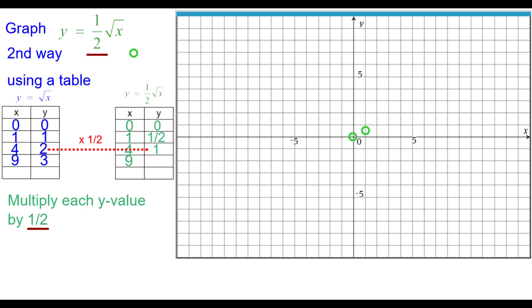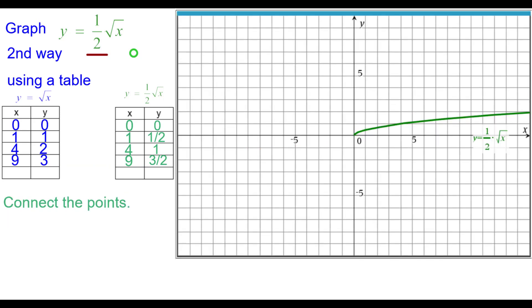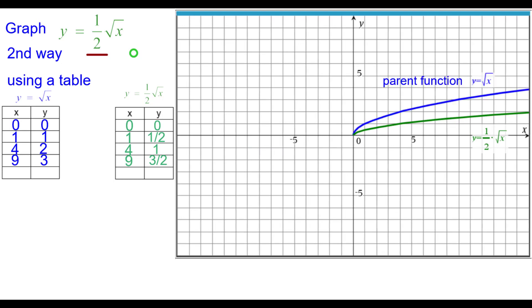2 times a half is 1 so 4 comma 1, and 3 times a half is 3 halves, 9 comma 1 and a half. Connect the points and we'll get that square root looking graph and compare it to the parent function in blue.